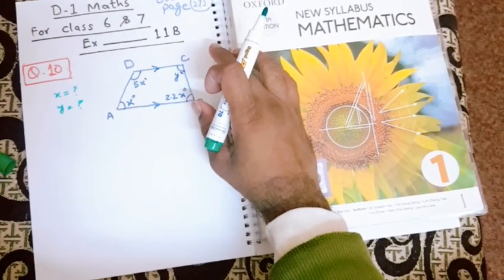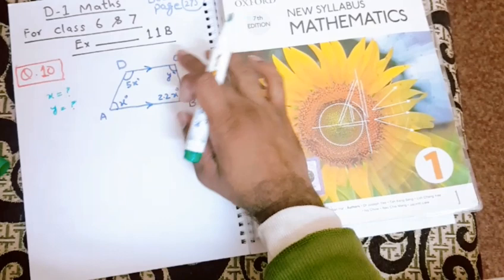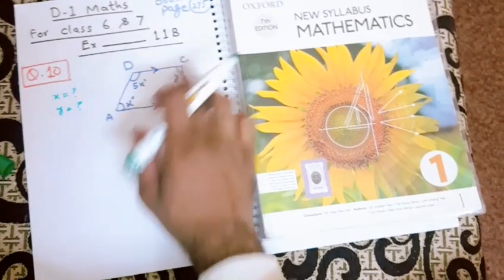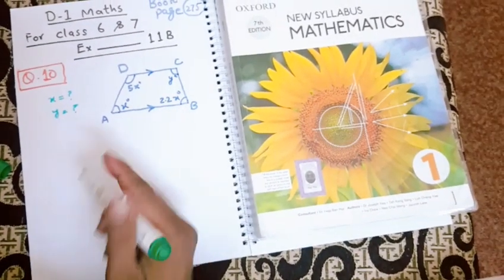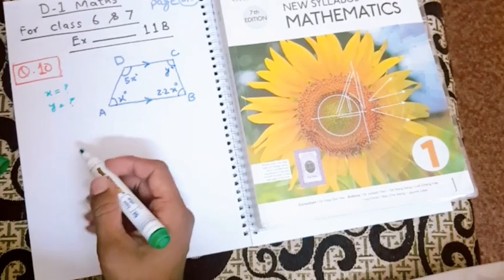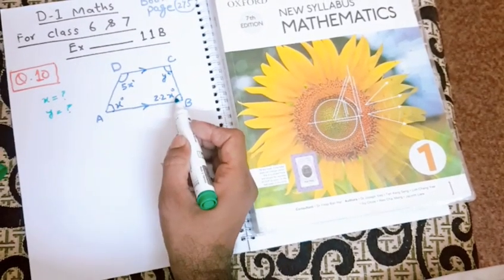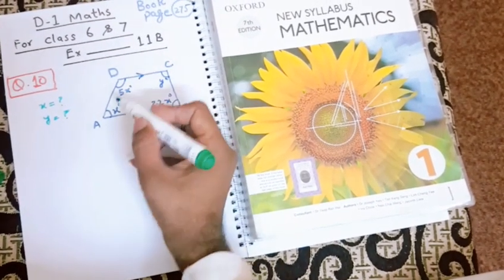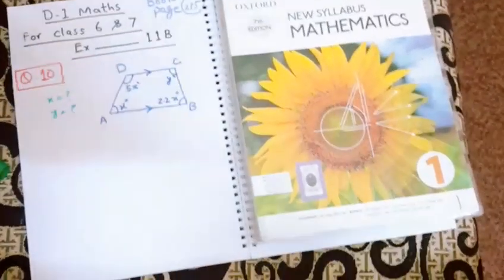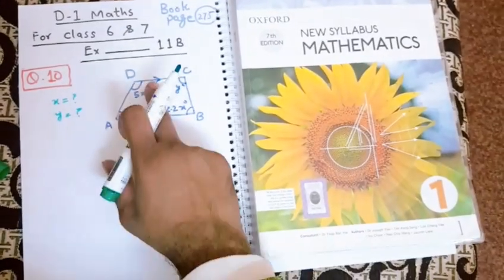Only two lines are parallel. They have also told this information in the question, that this line is parallel to this line. Let's start the question now. If they are parallel lines, that means the angle, this one angle and this one angle...